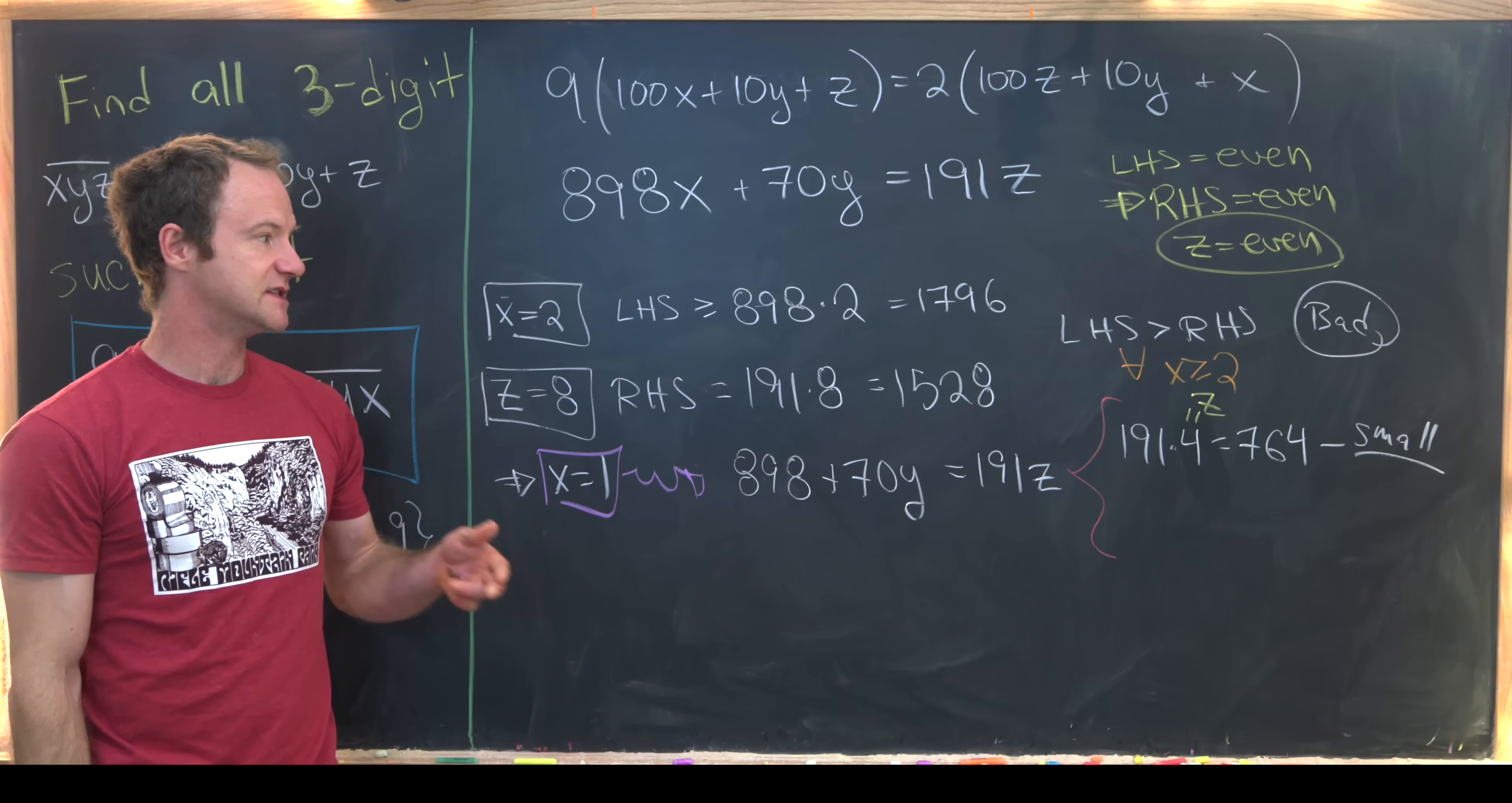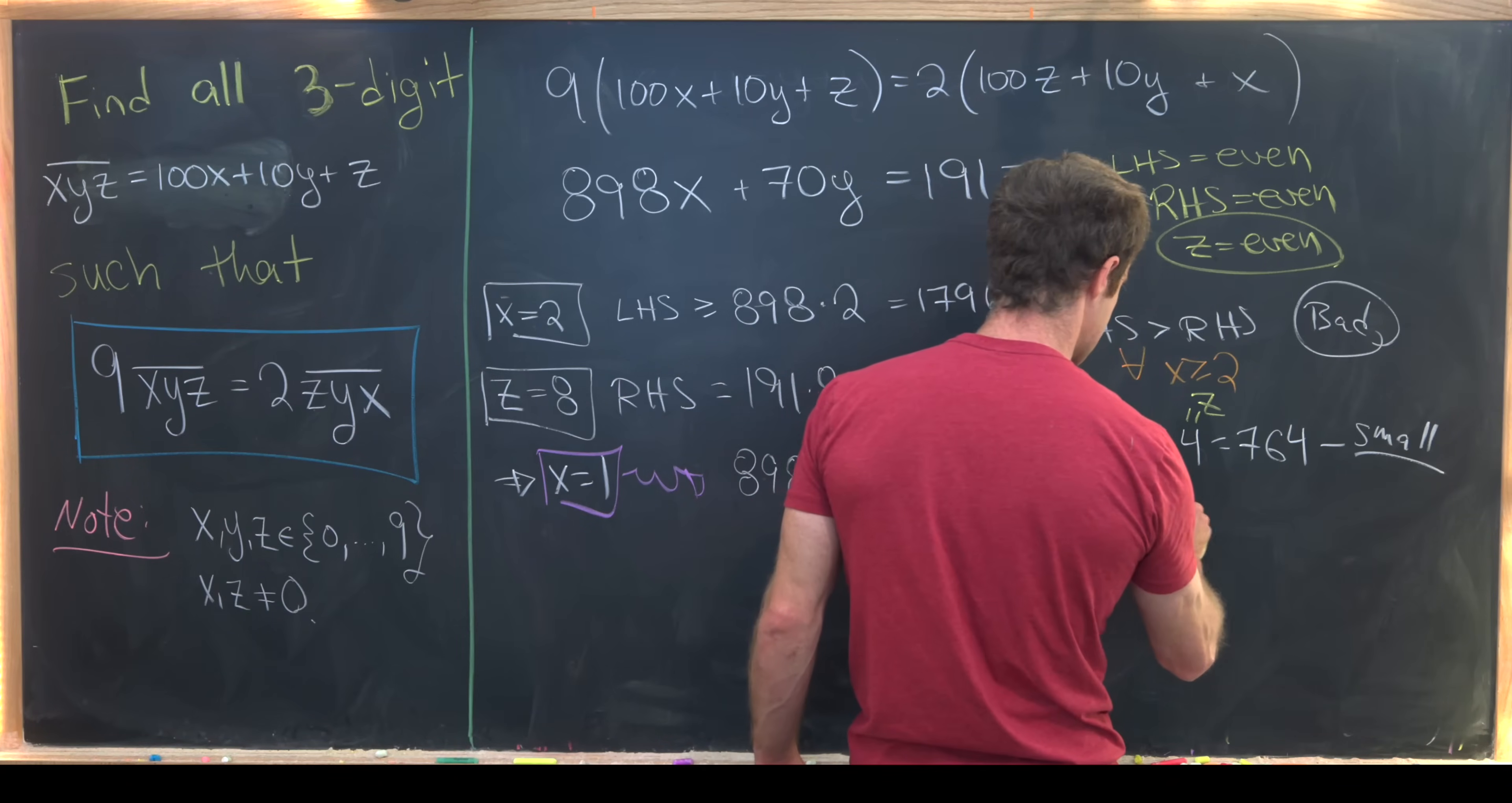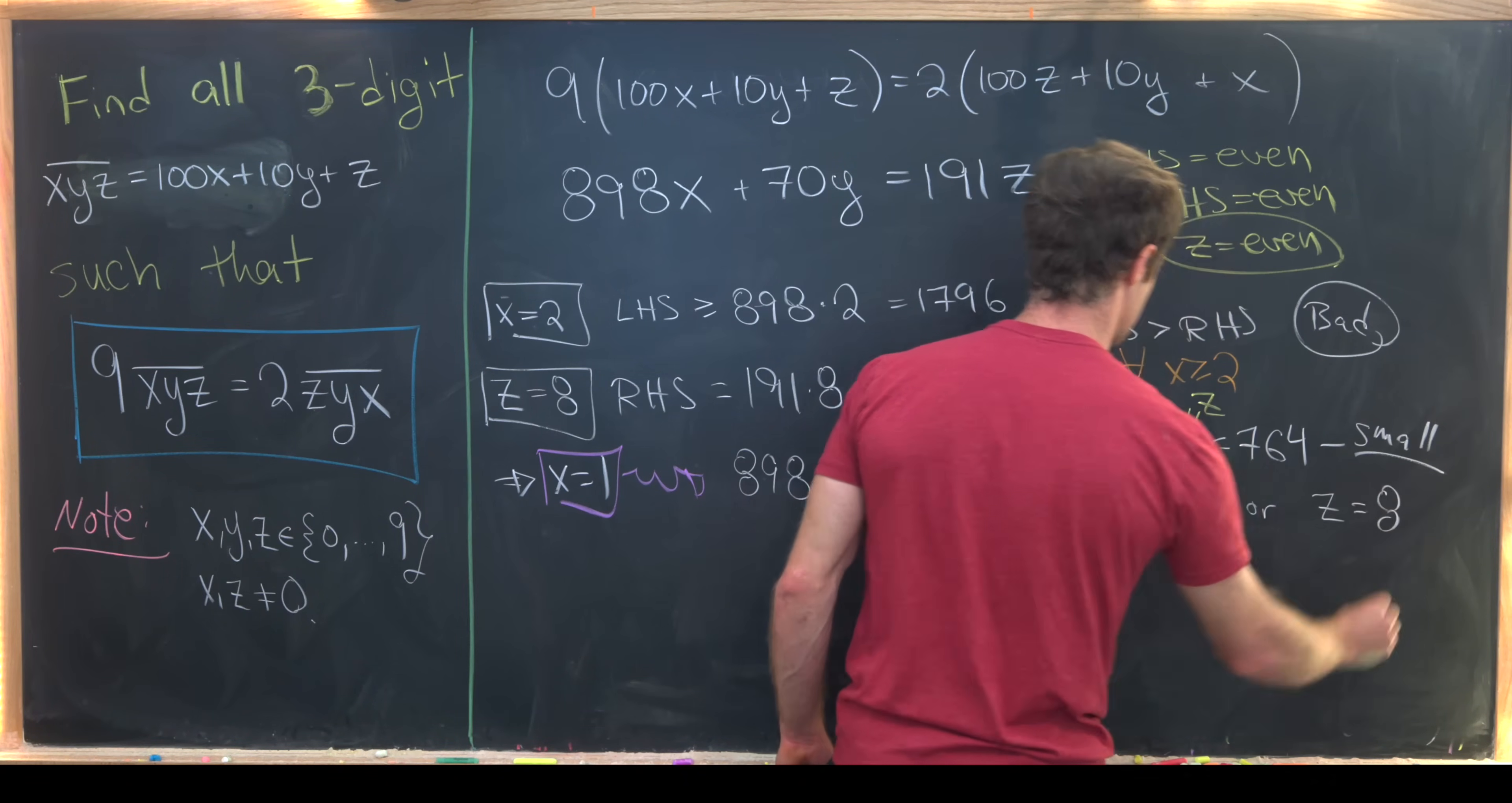z has to be even. z equals 4 is too small. That means that z is either equal to 6 or z is equal to 8.